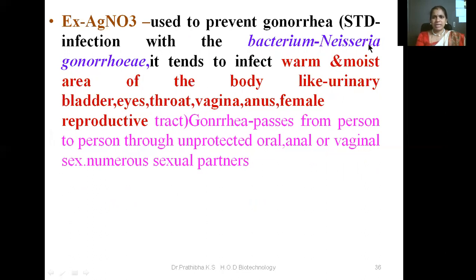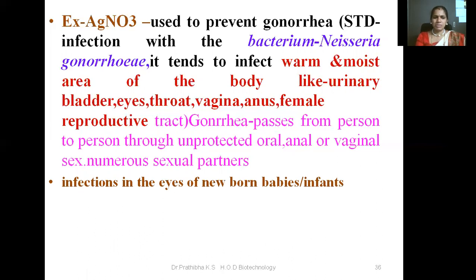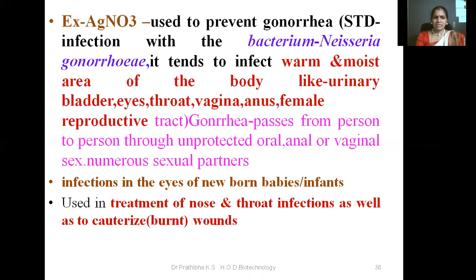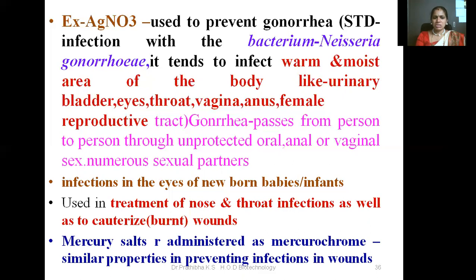Gonorrhea is caused by the bacterium Neisseria gonorrhoeae and tends to infect warm and moist areas of the body like the urinary bladder, eyes, throat, vagina, anus, and female reproductive tract. It passes from person to person through unprotected oral, anal, or vaginal sex. Infections in the eyes of newborn babies or infants are treated with silver nitrate. It is also used in the treatment of nose and throat infections and to cauterize burnt wounds. Mercury salts are administered as mercurochrome with similar properties in preventing infections in wounds.